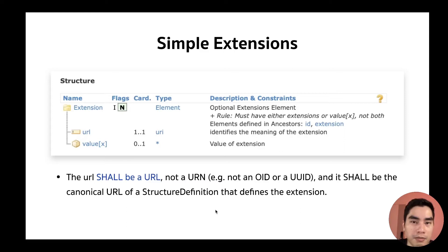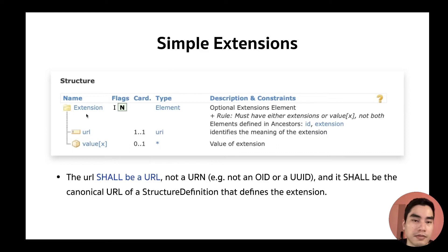In conclusion, every extension — whether simple or complex — will have a URL element that should contain a canonical URL. When the application gets the info from this URL, it can resolve the StructureDefinition of that extension so the system can understand what the extension is about. For a simple extension, it has only one value. When you see 'valueX,' it means it can be many types — because in an extension we can define many data types.